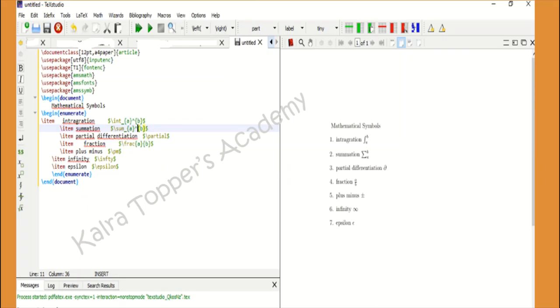This is the advantage that you can't type this symbol on other software. For summation the command is backslash sum. For partial differential sign the command is backslash partial. Frac, slash pm, infty for infinity, and epsilon for epsilon.